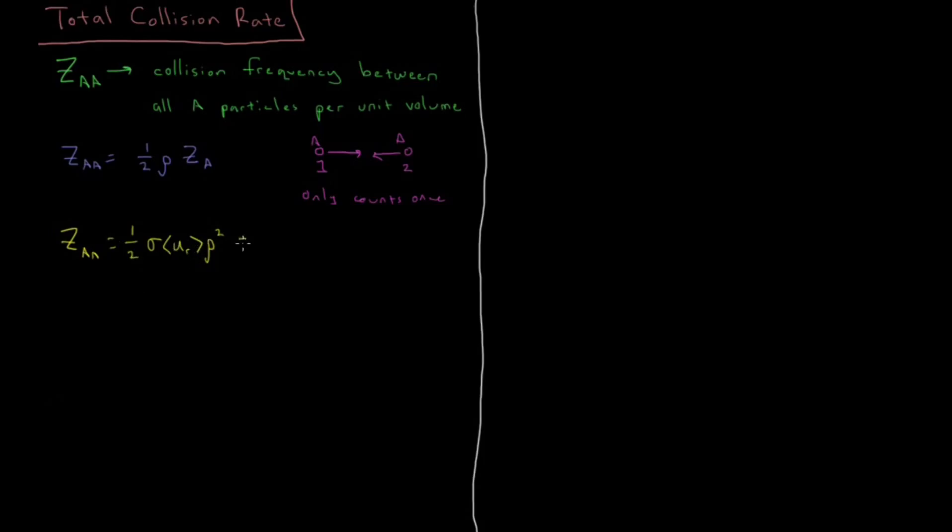And so that is going to be one half sigma u times square root of two times rho squared. This square root of two here is going to partially cancel with this two on the bottom, making that a square root on the bottom.